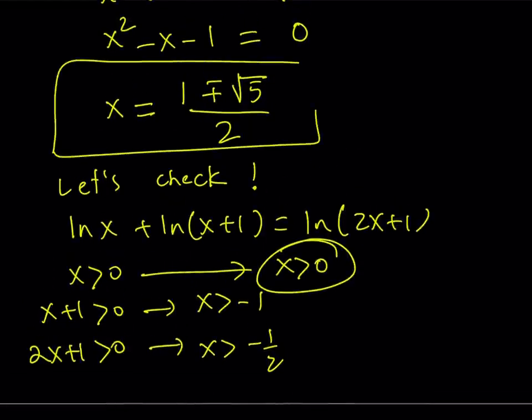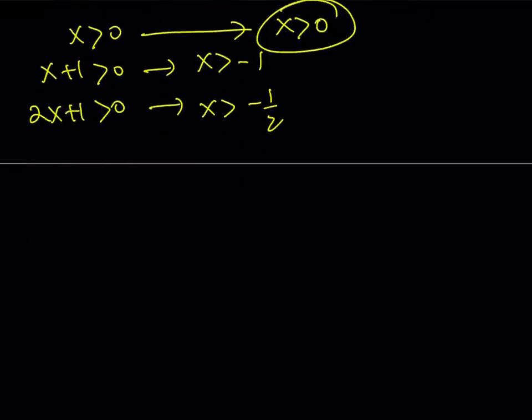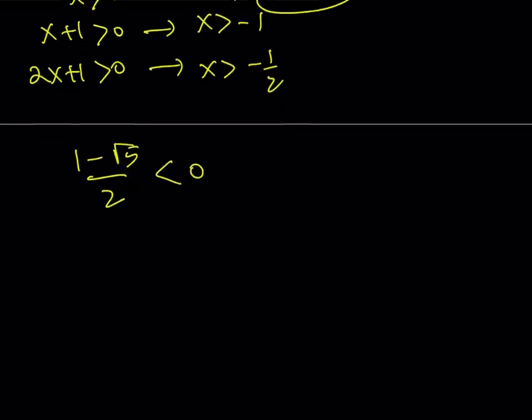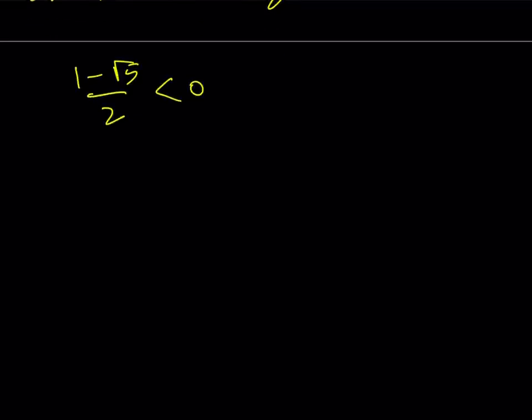So we want the x values to be positive. However, (1 - √5)/2 is not positive, right? Because √5 is greater than 1. This is negative. So you don't want that. So we end up with a single solution. But don't just underestimate the power of the single solution, because it is a very, very powerful solution. Why?